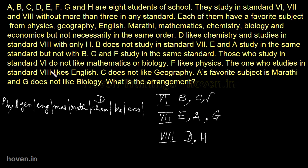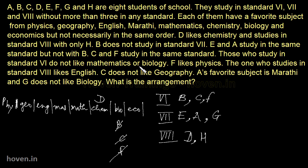Those who study in standard 6th do not like maths or biology. So B, C and F are in standard 6th — they don't like biology. I will write here B cross, C cross, F cross, meaning these can't come into biology. Those in standard 6th do not like mathematics either, so I will also cross here B cross, C cross and F cross for maths.